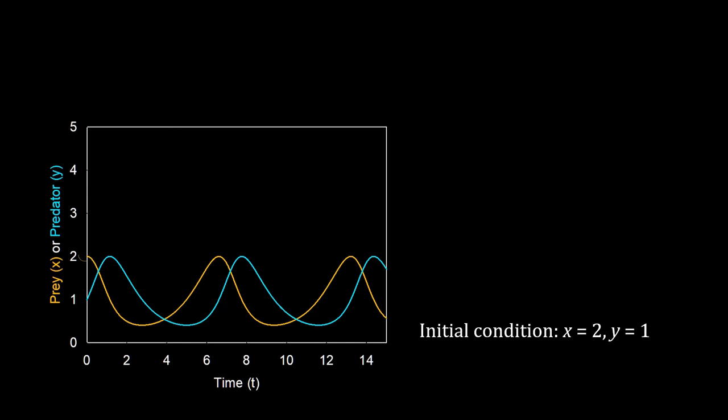Initially, the number of preys was high. As the predators eat those, the prey population drops. But the number of predators increases as they reproduce more. After some time, there will be almost no prey to feed. So, the predator population will drop and the prey population would come back.